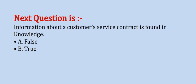Next question: information about a customer's service contract is found in knowledge. Options are: Option A, false; Option B, true. The correct option is Option A.